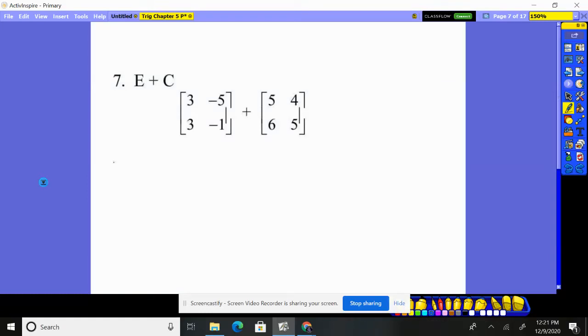Number seven, it has us have some matrices and wants us to add them. And again, I do not know why this isn't just perfect. When I download the PDF into this Active Inspire, there's a little glitch that messes it up.